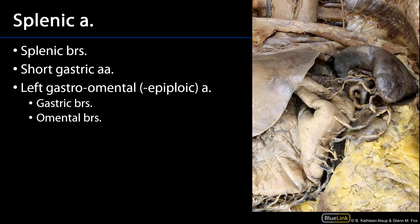Finally, the splenic artery. We can see the distal portion of the splenic artery here, and we can see exactly how tortuous and curvy it is. The splenic artery gives off short gastric branches serving the fundus of the stomach, as well as splenic branches to the spleen. And then finally, the left gastro-omental artery — also called the left gastroepiploic artery — winds down and anastomoses with the right gastro-omental artery of the gastroduodenal artery. Like its counterpart, it has both gastric branches and omental branches.